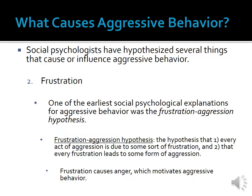The second factor is frustration. One of the earliest social psychological explanations for aggressive behavior was the frustration-aggression hypothesis. According to this hypothesis, every act of aggression is due to some sort of frustration, and every frustration leads to some form of aggression. Frustration causes aggression because it leads people to experience anger, and this anger motivates people to take actions against the persons, things, and situations they believe are causing them frustration. Good examples might be a person who hits his television set because it isn't working correctly, or a person who slaps another across the face because this person has taken money from her.